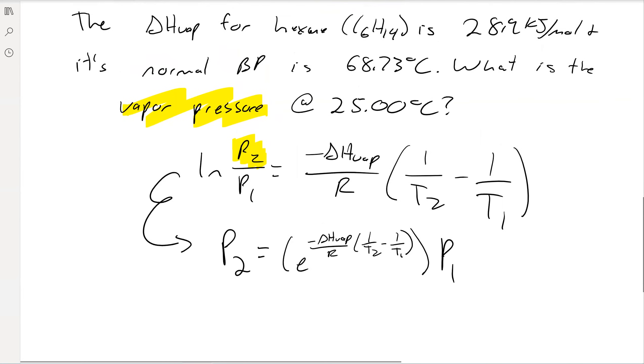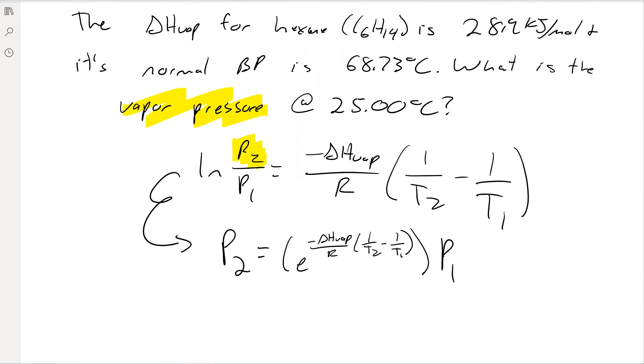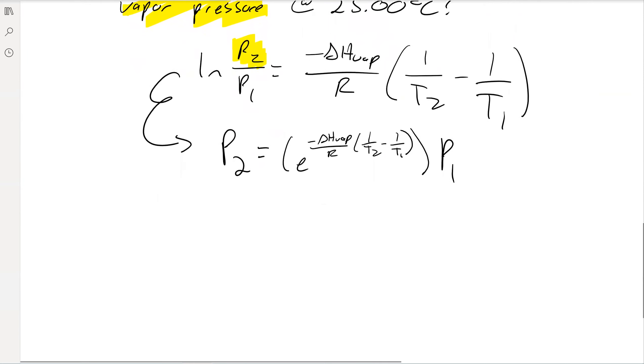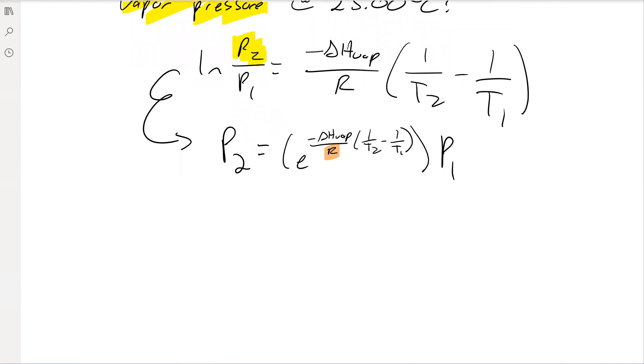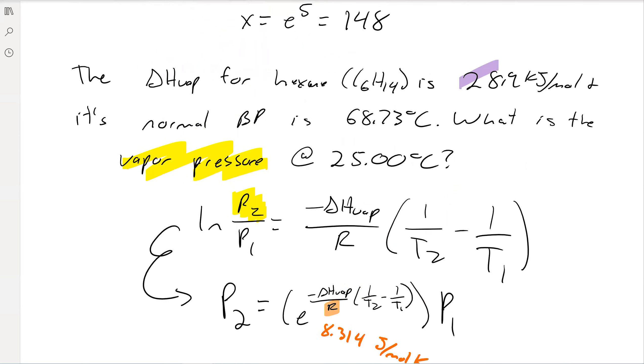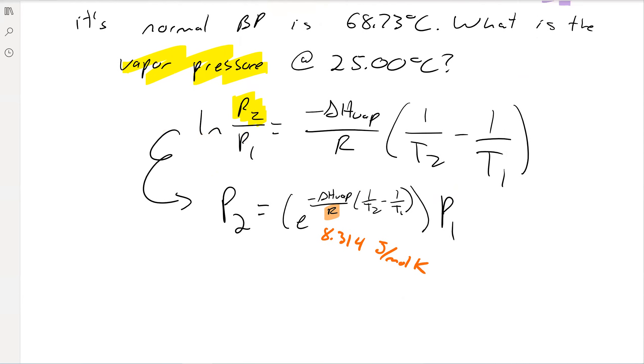Then I start plugging and chugging, being careful that all of my units correspond to one another. Remember that R is our constant, so that'll give us a clue about what units we need. R is 8.314 joules per mole Kelvin, so we need energy in joules, amount in moles, and temperature in Kelvin. For our delta H of vaporization, we have 28.9 kilojoules per mole, but we need to convert that into joules. We'll multiply by 1,000, so you get 28,900 joules per mole.